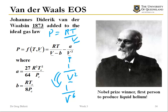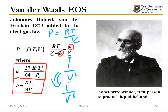Another important feature of this equation is that the parameters a and b are simply functions of the critical properties. As long as you know the critical properties of a substance, you can write the equation of state for it and calculate pressure given volume, or solve for volume given pressure. This transferability between substances is the beauty of equations of state.